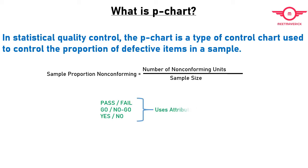The p-chart only accommodates pass or fail type inspection or attribute data, as determined by one or more go-no-go gauges or tests, effectively applying the specification to the data before they are plotted on the chart. The process attribute or characteristic is always described in yes or no, pass or fail, go-no-go form.